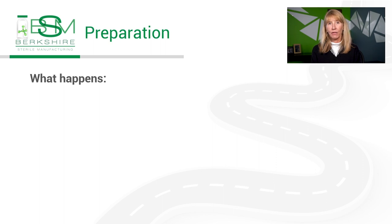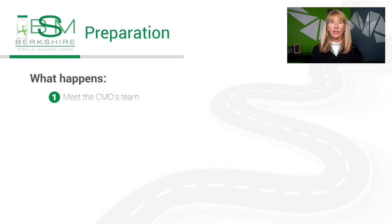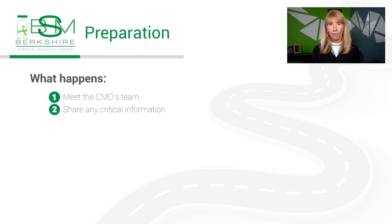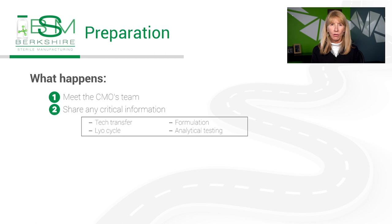When you first sign onto a fill finish project, you will meet with the team of the contract manufacturing organization that you contracted with. You need to hand over all critical information about the product and manufacturing process to them so they can begin their work. This involves any documents or information pertaining to the tech transfer, your LIO cycles, your formulation, your pH ranges for the process engineering group to use.